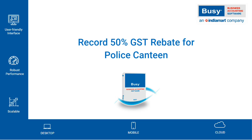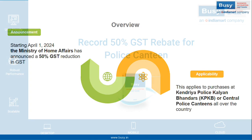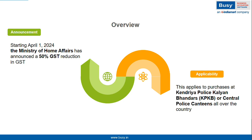Recently, the Ministry of Home Affairs announced that starting from April 1st, 2024, Army and Police staff who purchase items from the Central Police Canteen or the Kendri Police Kalyan Bhandars will receive a 50% rebate on the total GST.